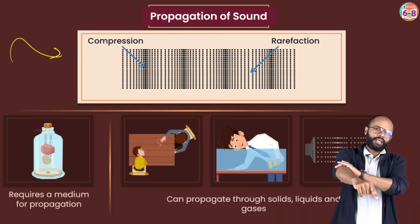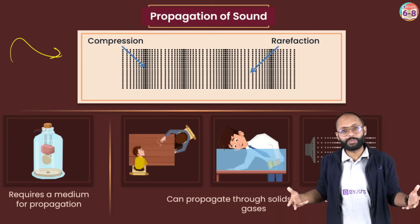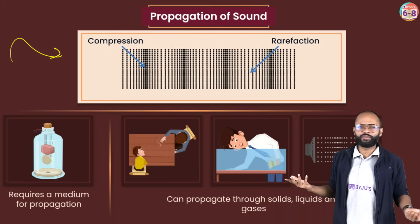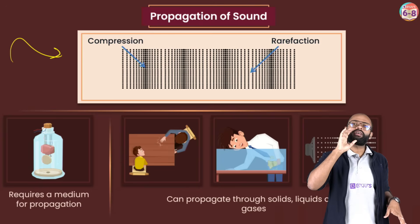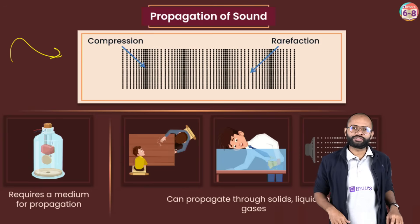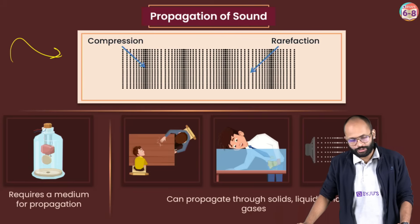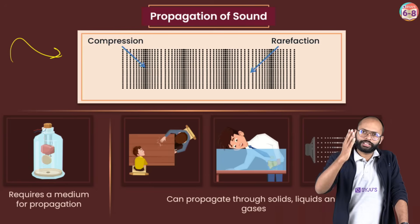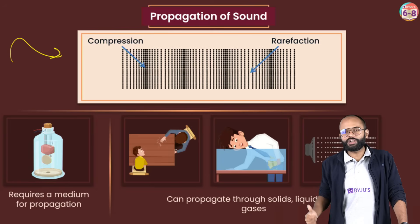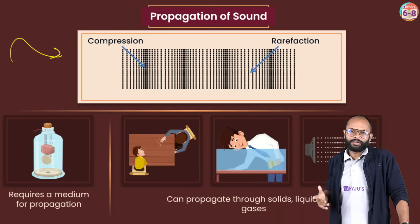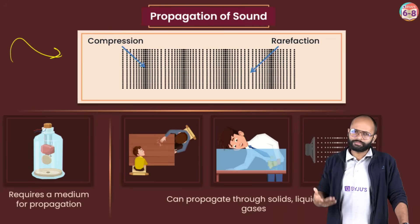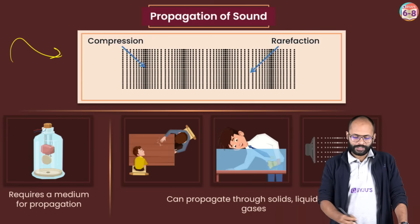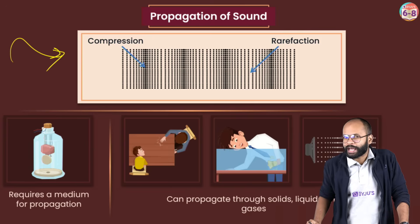All these activities prove sound can travel through mediums that are solid, liquid and gas. Without a medium — that is, in vacuum — you cannot hear anything. In space, on the moon, people cannot just call out to each other; they talk through radio transmitters. Sound requires a medium for propagation, can travel through solids, liquids and gases. The speed of sound is fastest in solids and minimum in gas.